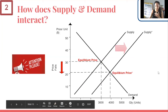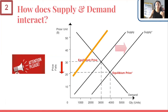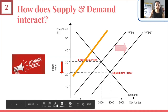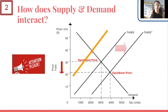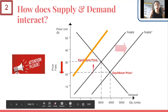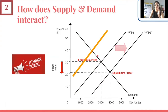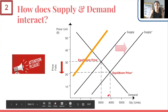Similarly, if supply shifted down for whatever reason and there's a new orange supply line, what happens to price? Where do supply and this new line intersect? Right up here — and this is a higher price, but a lower quantity. So we can see these things change as supply changes: the price changes and the quantity changes.